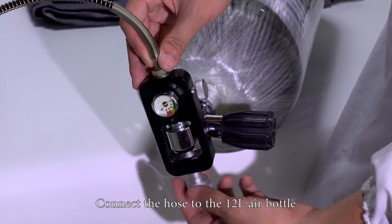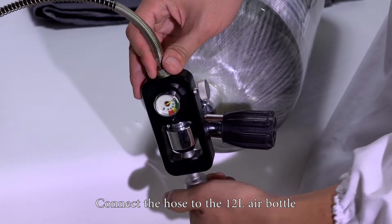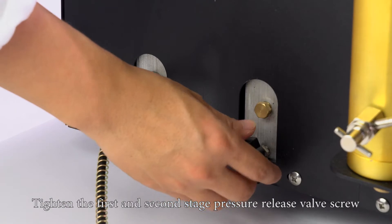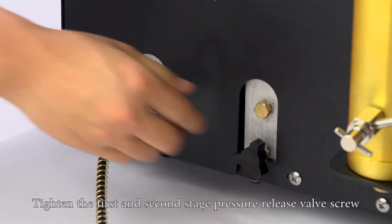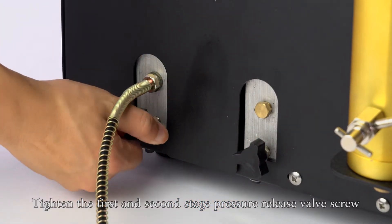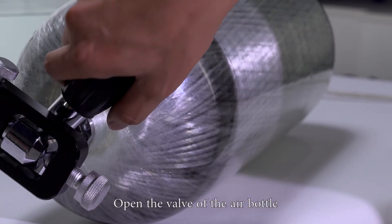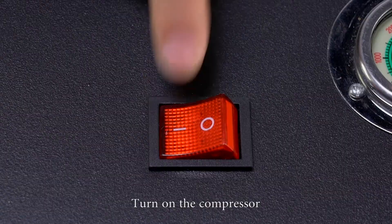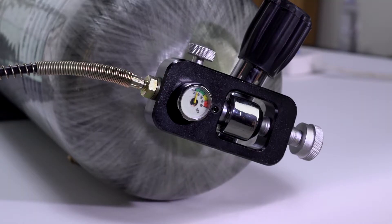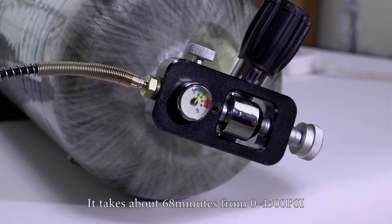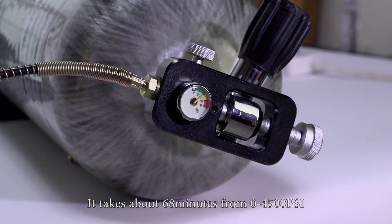Connect the hose to the 12 liter air bottle. Tighten the first and second stage pressure release valve screw. Open the valve of the air bottle. Turn on the compressor. It takes about 68 minutes from 0 to 4500 psi.